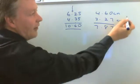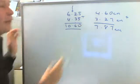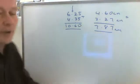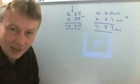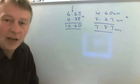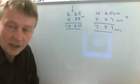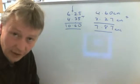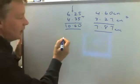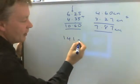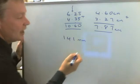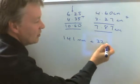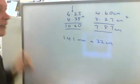Really, in terms of adding decimals, the only other area that you might need to consider is to make sure that you're working with the same units. So it could be that you've got 141 millimeters, and that's going to be added to 22 centimeters.